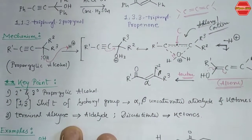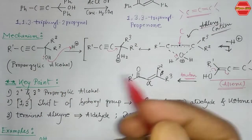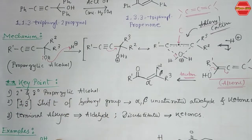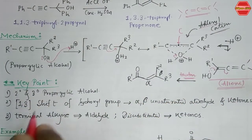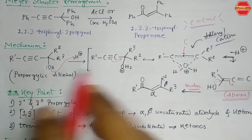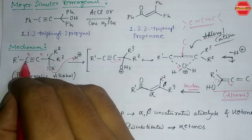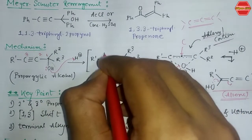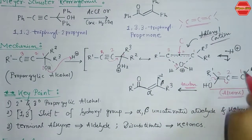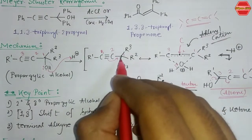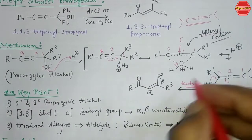Some key points for this reaction: secondary or tertiary propargylic alcohol is used for the Meyer-Schuster rearrangement. One important thing is that a 1,3-shift of the hydroxyl group takes place to form an α,β-unsaturated aldehyde or ketone. If you number from position 1, the OH group migrates to carbon number 3 — so after allene formation you get the OH at carbon 3, which is why it is called a 1,3-shift of the hydroxyl group.